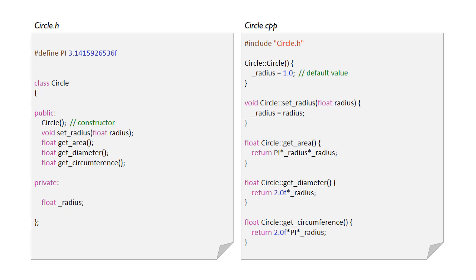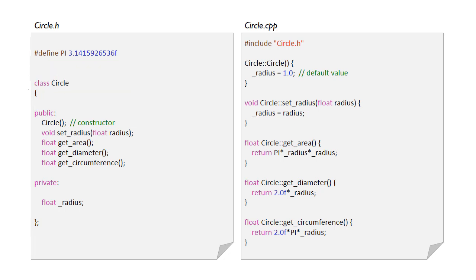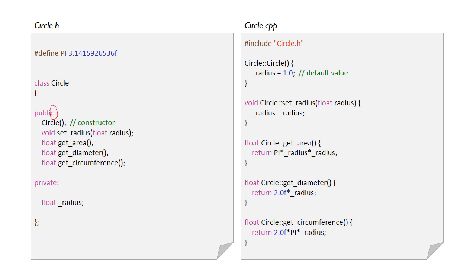Looking at the header file, the first thing we do is define pi, since we're going to be doing some trigonometry. Then we have the definition of the class — we use the class keyword, followed by the name of our class, with opening and closing curly brackets and a semicolon. Everything inside is the class definition. We're going to define some public things — things that users of this class will be able to use. You can see we've got the public keyword followed by a colon — not a semicolon, a colon — and then a list of our public methods.